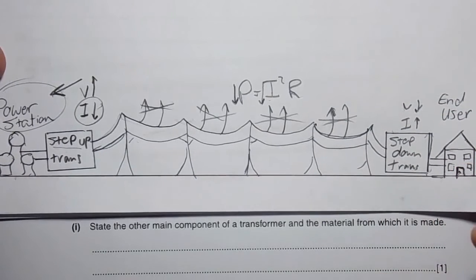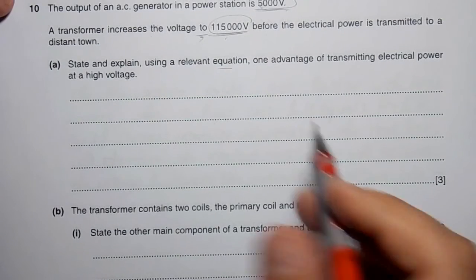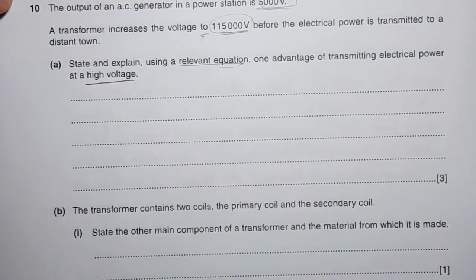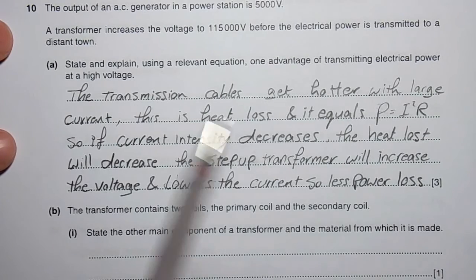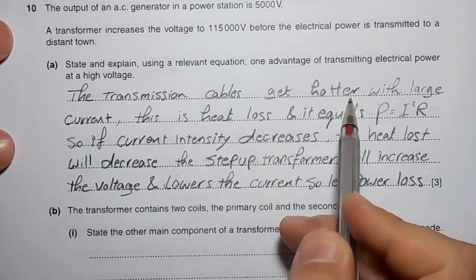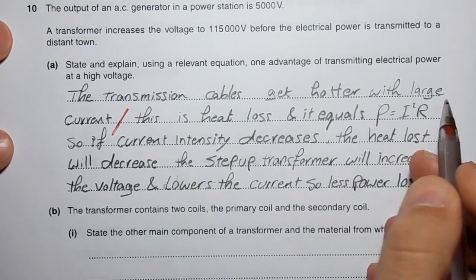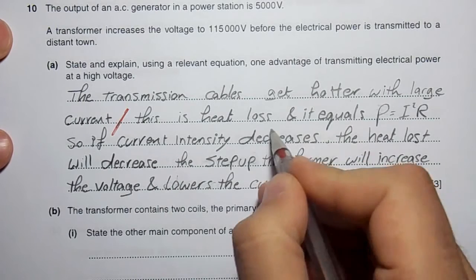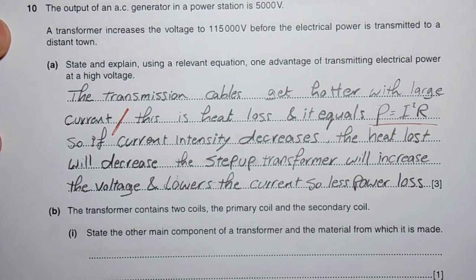I hope you understand the story. The question asks: using equations, tell me the advantage of transmitting power at high voltage. I'll say: transmission cables get hotter with large current. This is heat loss and it equals P equals I square R.